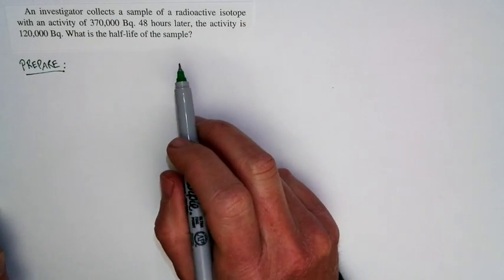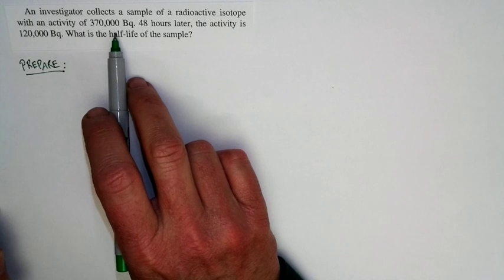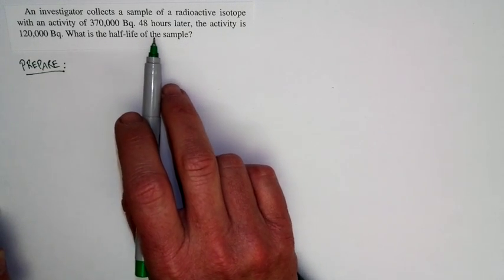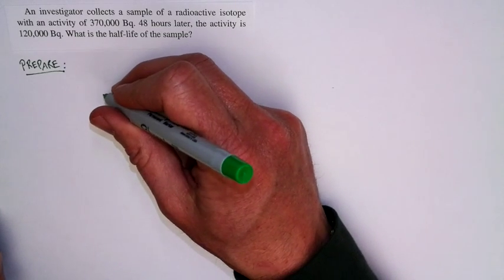Okay, so we're told that an investigator collects a sample of a radioactive isotope with an activity of 370,000 Becquerels. 48 hours later, the activity is 120,000 Becquerels.